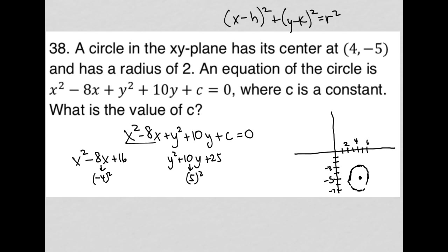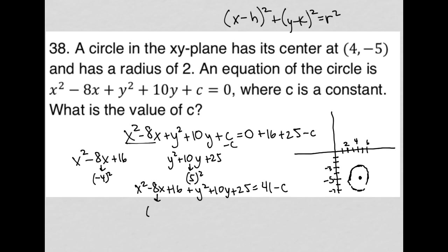Whatever I've added to the left-hand side of the equation has to also be added to the right side. So I add 16 and 25, and I move the c over by subtracting c. What I'm left with is x² - 8x + 16 + y² + 10y + 25 = 16 + 25, which is 41, so 41 - c. The whole point of completing the square is I get to convert these trinomials into a binomial squared — x minus half the middle term, so (x - 4)², and (y + 5)² = 41 - c.